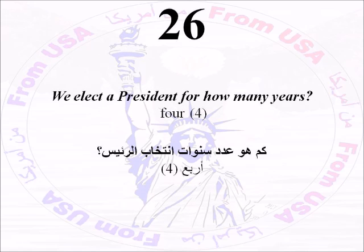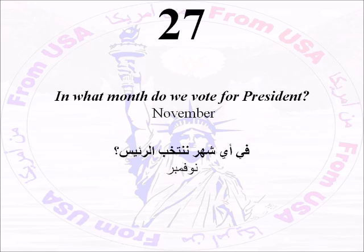Number Twenty-Six: We elect a president for how many years? Four. Number Twenty-Seven: In what month do we vote for president? November.